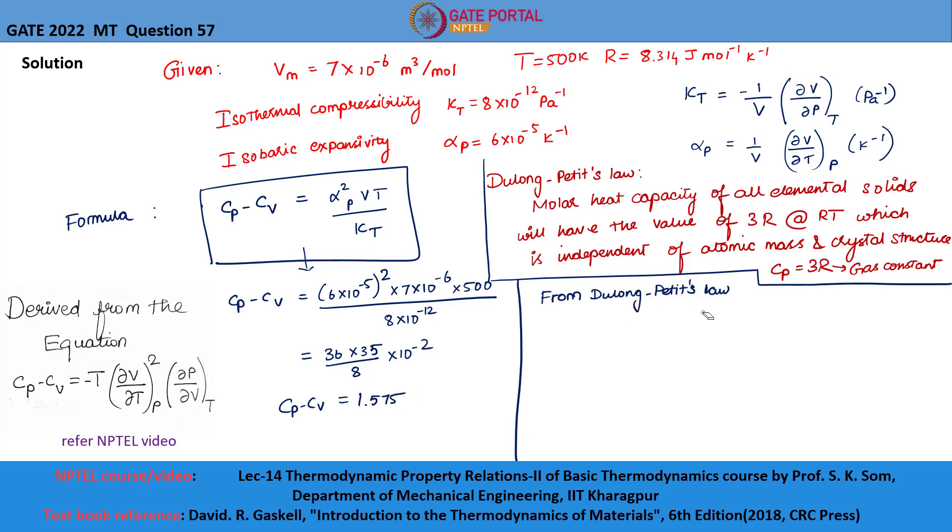From Dulong-Petit's law, we know that Cp equals 3R, which is equal to 24.942 joules per mole per Kelvin. Substituting this value of Cp in this equation, we will be getting the value of Cv as 23.367.